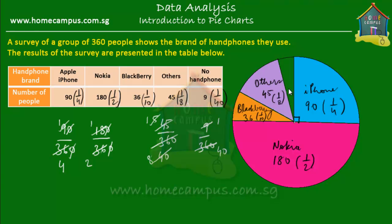Finally, whatever is left represents those who didn't use any handphone at all — one-fortieth of the whole pie, 9 in number. That's your pie chart. It has the same information as the table, except it's more readable. A pie chart is always more readable — when you see it visually, you can comprehend it better than reading words in a table.